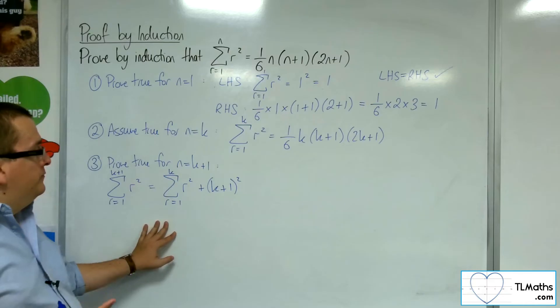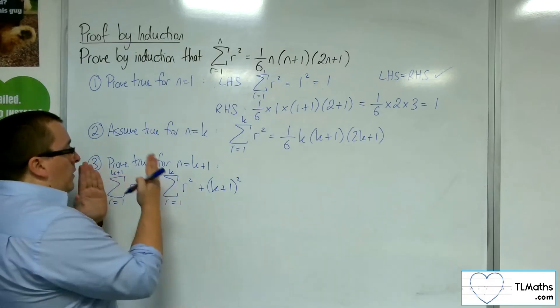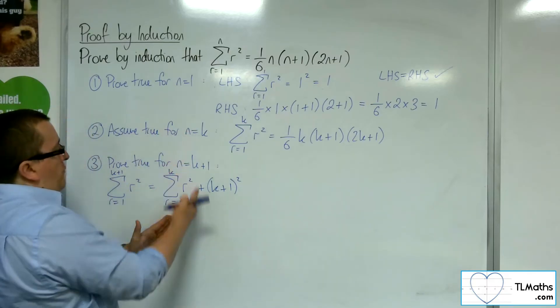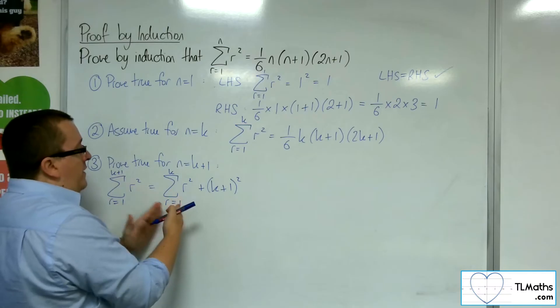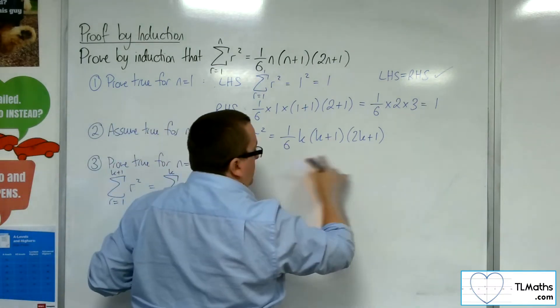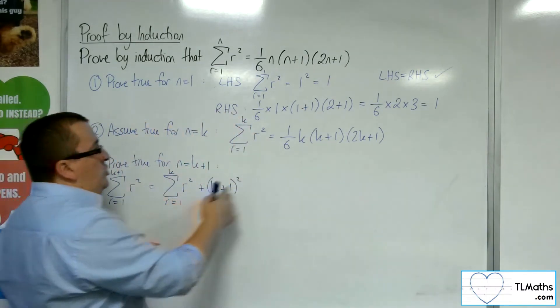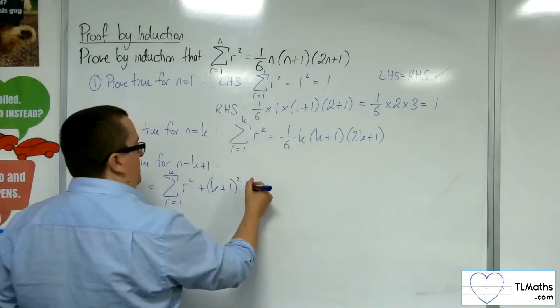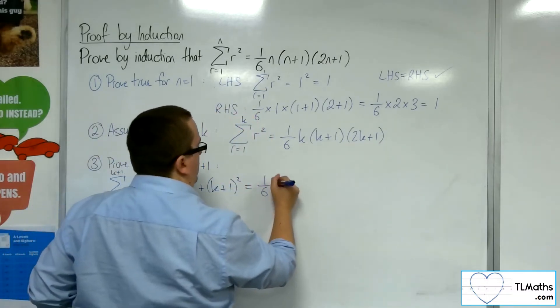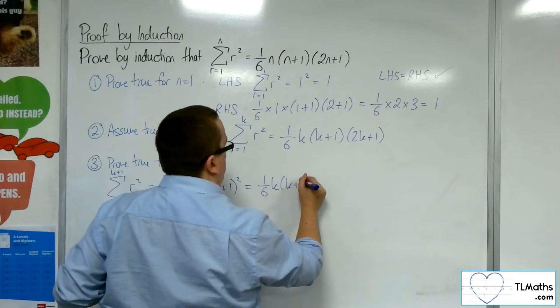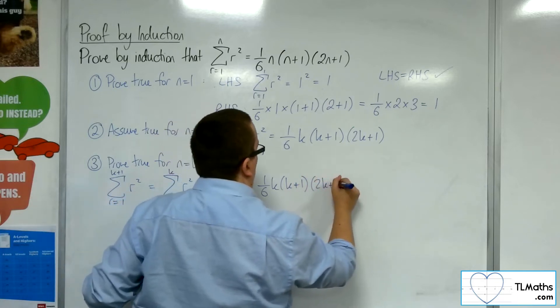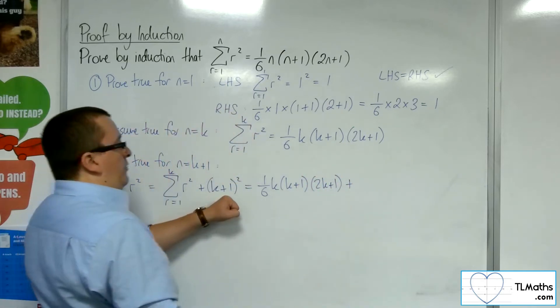Now, we know that if true for n equals k, then we have that this is this. So, I can replace this summation with this right-hand side. We've got 1/6 k, k plus 1, 2k plus 1, and then I've got this k plus 1 squared on the end.